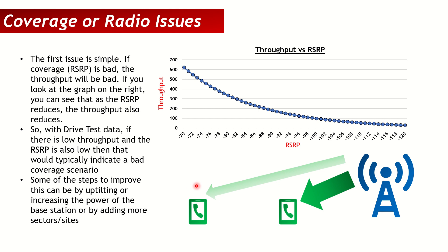Another approach is to send users in bad coverage to a lower-frequency layer. For instance, if a user is having bad throughput on 2600 or 3500 MHz bands — which have lower coverage and lower penetration — you can adjust your mobility strategy so those users move to a lower band like 1800 or 800 MHz, where they should have better coverage. These kinds of things can be done to improve coverage constraints, and you can easily find this from the drive test log file.